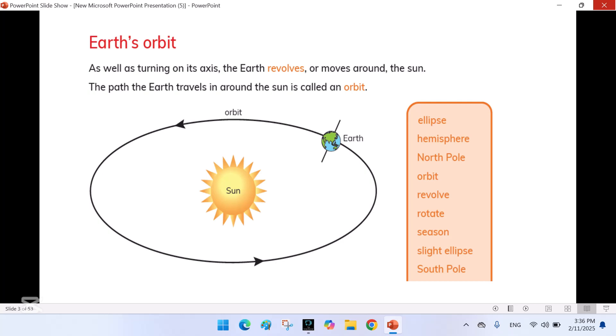Earth's orbit. As well as turning on its axis, the earth revolves or moves around the sun. The path the earth travels in around the sun is called an orbit.